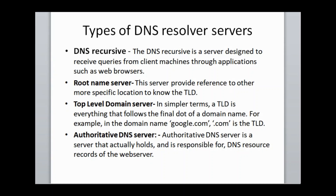The fourth type is the authoritative DNS server. This is the actual server — the one that holds the information about the URL, is responsible for the URL you are accessing, and also maintains the records for the web server.